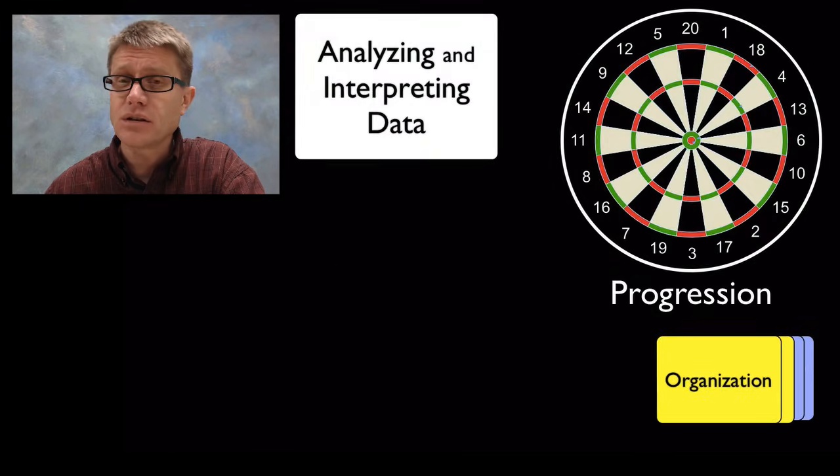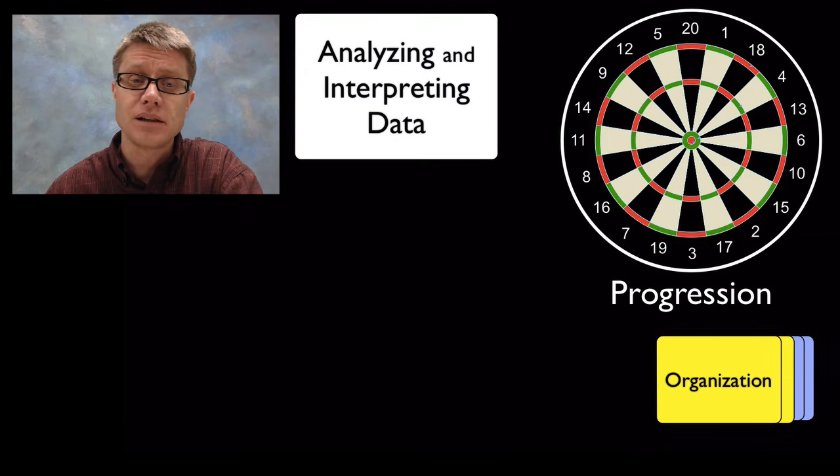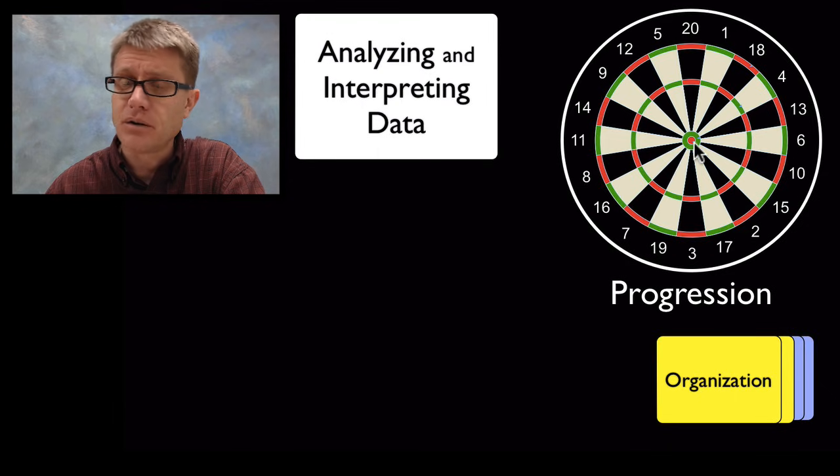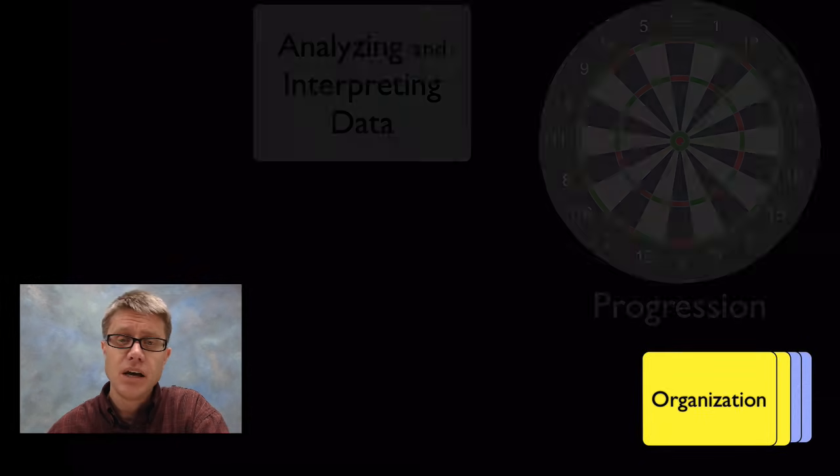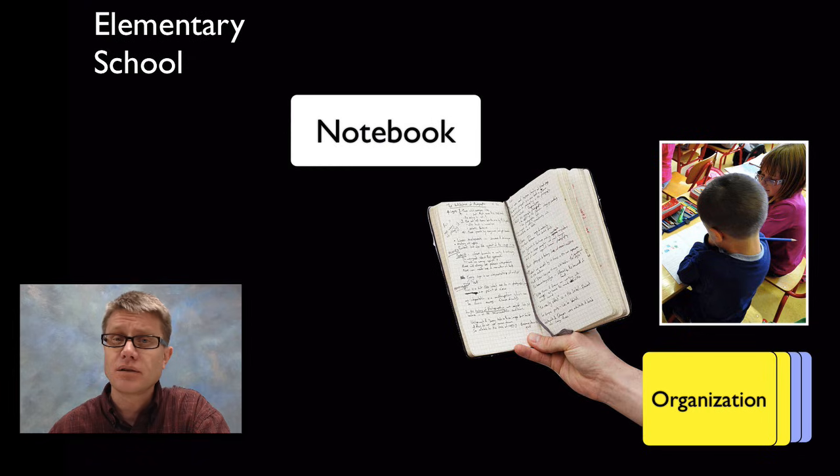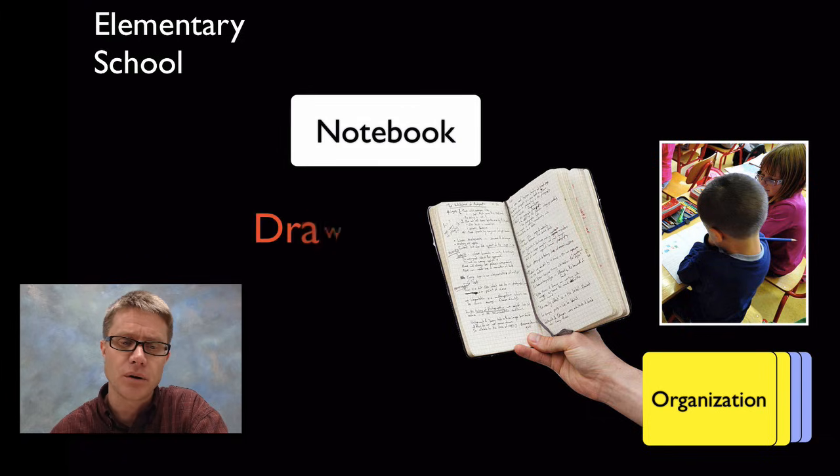The progression in school of analyzing and interpreting data really should start at the elementary level. It's like throwing darts but getting better and better through the years. We can break this down by school level. In elementary school students should be using a notebook, a science notebook, and they should be collecting data and everything goes into that notebook.